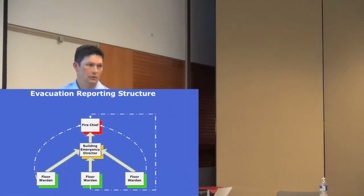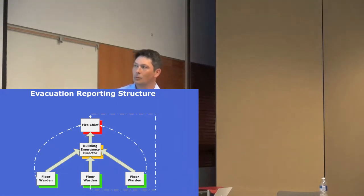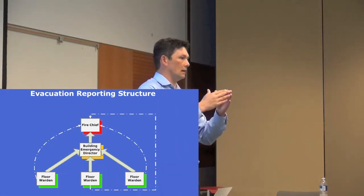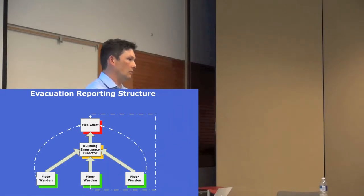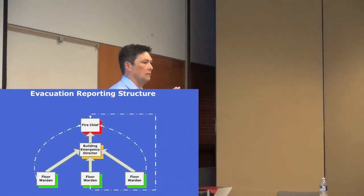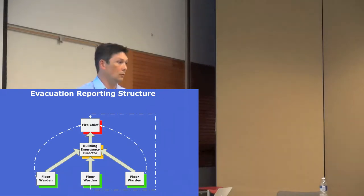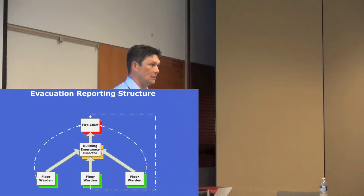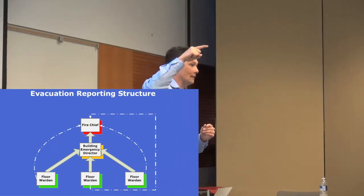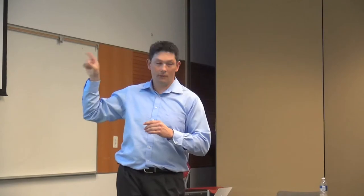Here's a quick diagram of what happens in an emergency. Floor wardens report everything to the emergency director, who then reports it to Vancouver Fire and Rescue Service. If a floor warden has pertinent information that needs to go to the fire department right away, you can go above the emergency director and tell them directly — there's no problem with doing that.